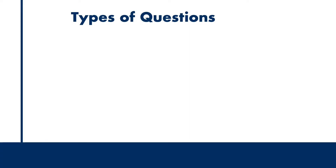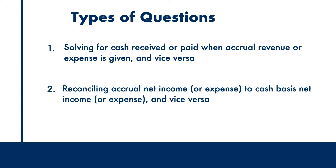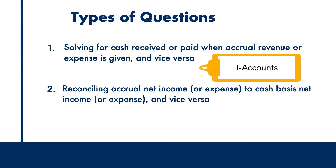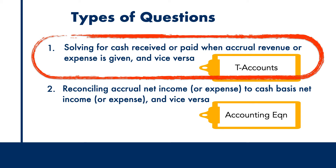I'm going to begin by letting you in on a quick secret. There are essentially only two types of questions that you're likely going to see under the topic of accrual accounting. The first involves solving for cash received or paid when accrual revenue or expense is given, and vice versa. The second asks for reconciling accrual net income to cash basis net income, and vice versa. The first problem can be solved using T-accounts and the second using the accounting equation. In this video I'll show you how to work the first problem using T-accounts.